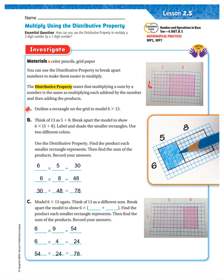Outline a rectangle on a grid to model 6 times 13. I went 6 down and 13 across and made myself one big rectangle. Now, think of 13 as 5 plus 8. Break apart the model to show 6 times 5 plus 8. Label and shade the smaller rectangles using two different colors.